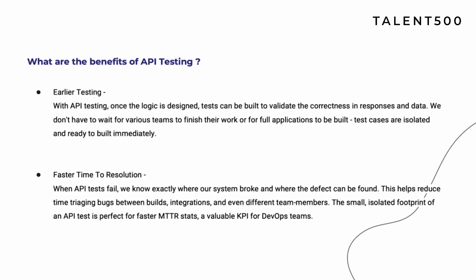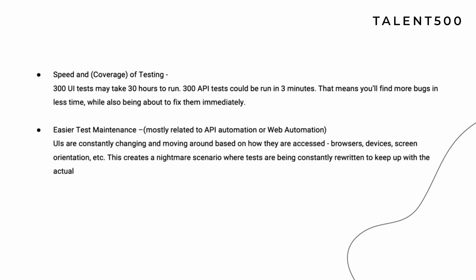The second benefit is faster time to resolution. When an API test fails, you know exactly where the system broke. With UI testing it is difficult to identify the impacted area, but with API you have specific endpoints — for example, you can quickly see that the 'update student' endpoint or 'create student' endpoint is broken. This makes it easy and quick for developers to identify impact areas.